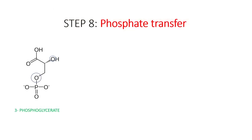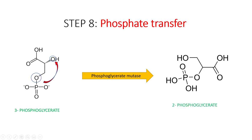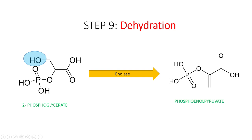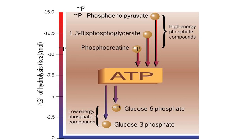After that, 3-phosphoglycerate is converted to 2-phosphoglycerate by transferring the phosphate from the third carbon atom to the second, catalyzed by phosphoglycerate mutase. In step 9, the enzyme enolase catalyzes the dehydration of 2-phosphoglycerate to phosphoenolpyruvate. Enols are high-energy compounds with high potential for phosphate transfer, and since phosphoenolpyruvate has higher energy than ATP, it will be used to transfer phosphate to ADP.